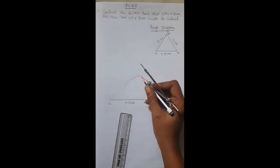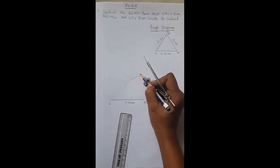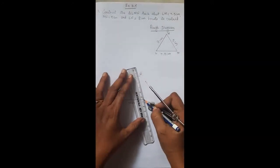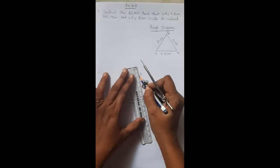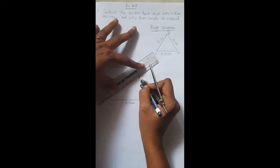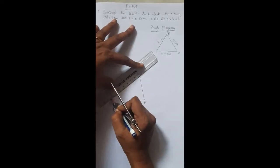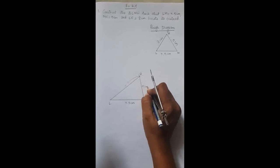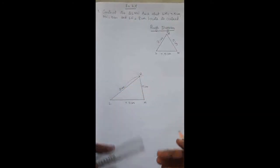The arc drawn for 5 cm and the arc for 8 cm meet at the point N. Join MN and LN. MN is 5 cm and LN is 8 cm, so we have constructed triangle LMN.